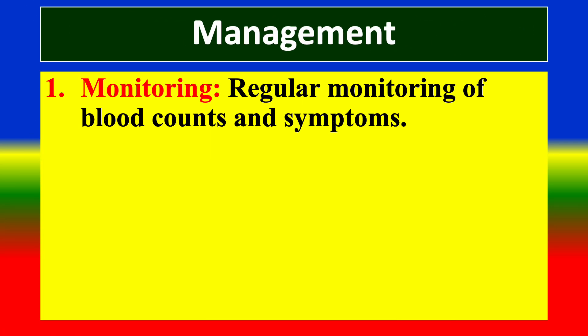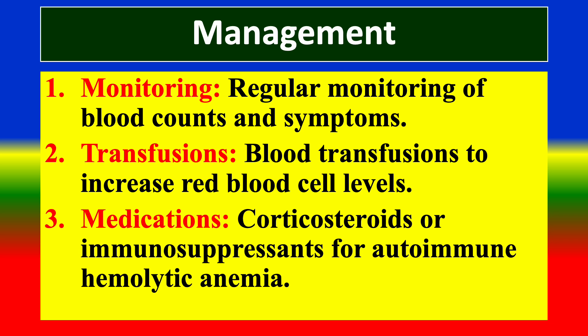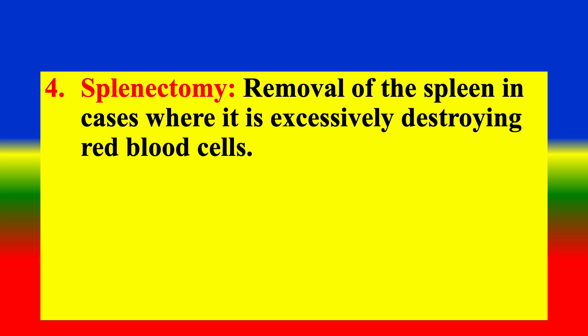Management: (1) Monitoring — regular monitoring of blood count and symptoms. (2) Blood transfusion — to increase red blood cell levels. (3) Medications — corticosteroids or immunosuppressants for autoimmune hemolytic anemia. (4) Splenectomy — removal of the spleen in cases where it is excessively destroying red blood cells.